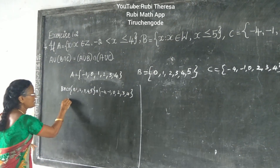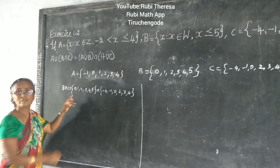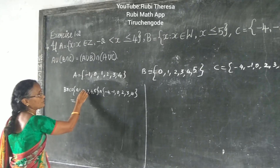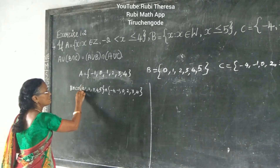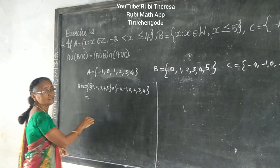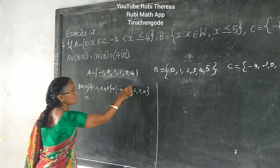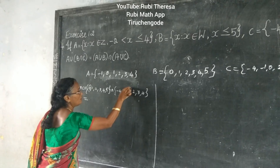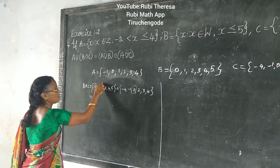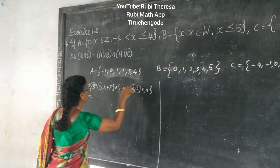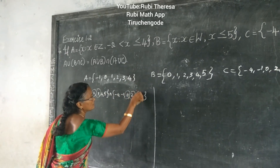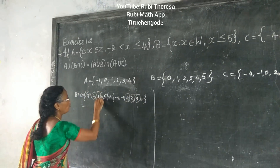Intersection means common elements. What are the elements that are common? 0 is common. Next, 2, 3, 4. So B intersection C = {0, 2, 3, 4}.